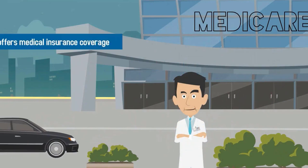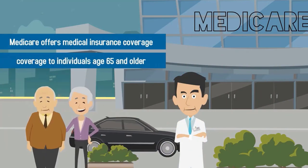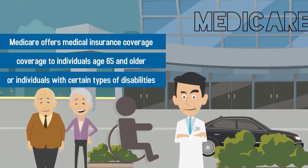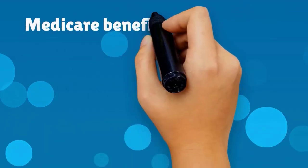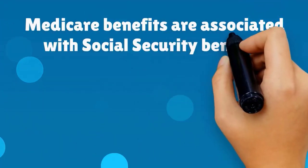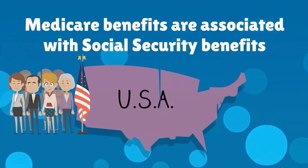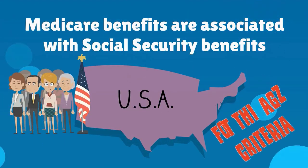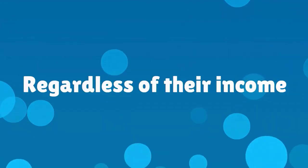Medicare offers medical insurance coverage to individuals age 65 and older, as well as individuals with certain types of disabilities. Medicare benefits are associated with Social Security benefits and are available to all U.S. citizens who fit the age criteria, regardless of their income.